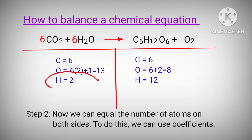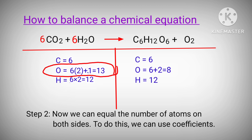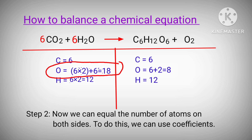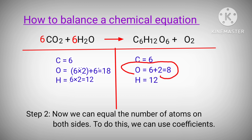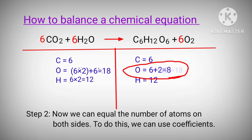Now on the left hand side, the two hydrogen atoms are changed into 12 hydrogen atoms and the 13 oxygen atoms are changed into 18 oxygen atoms. The left hand side now has 18 oxygen atoms and the right hand side has eight oxygen atoms, so to balance this we use the coefficient of 6 in front of H2O. Now the eight oxygen atoms on the right hand side are changed into 18 oxygen atoms. The equation is now balanced: six carbon atoms, 18 oxygen atoms, and 12 hydrogen atoms on both sides.